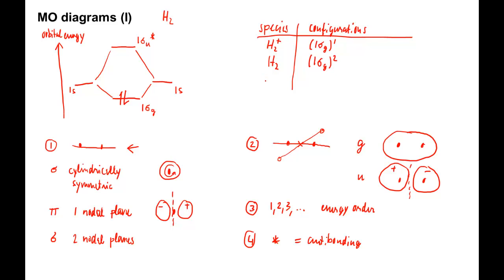Three electrons give H2-. The third electron goes into the antibonding MO and therefore weakens the bond compared to neutral hydrogen, H2. The electron configuration is 1 sigma G squared, 1 sigma U, 1.